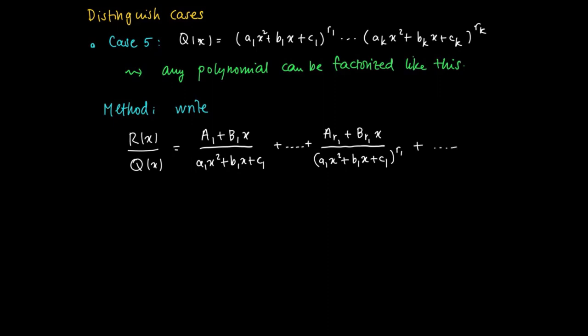We try to find linear terms divided by any such powers of a1 x squared plus b1 x plus c1, and we do this for any such factors that we find in the decomposition of Q, until the final one, aK x squared plus bK x plus cK. How this works, we will spend some time on this case in the next clip.